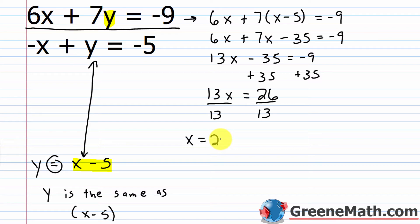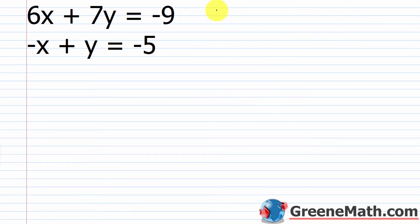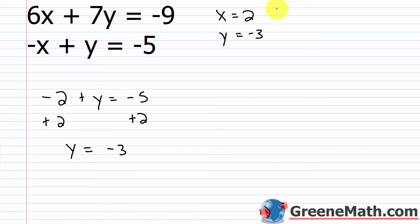Now I have a value for one variable — x equals 2. To find y, I plug 2 in for x in either original equation. Using the second equation: negative 2 plus y equals negative 5. Adding 2 to both sides: y equals negative 3. So x equals 2 and y equals negative 3, giving us the ordered pair 2 comma negative 3.